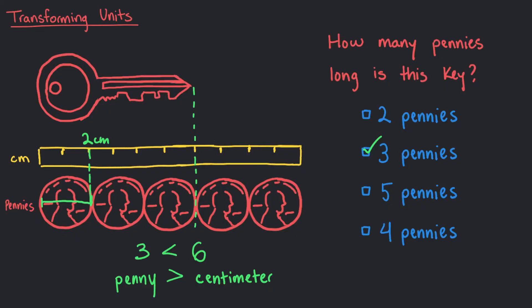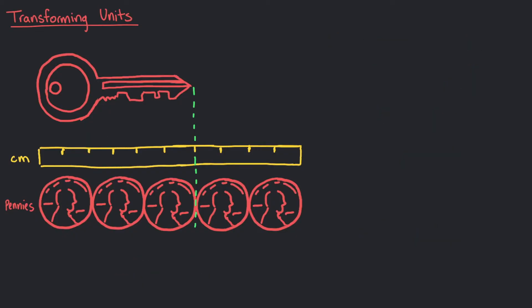It's the same object, Tina's key, but we have 3 different length measurements that are equivalent to each other. 1 key equals 6 centimeters, which equals 3 pennies.